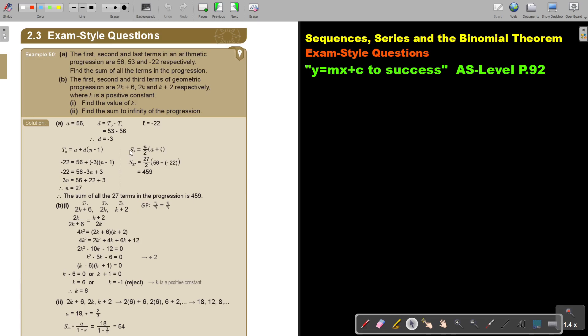And then I just simplify it and I get the value of n is 27. And now sn is n over 2 a plus l. So in the place of s 27, I'm actually looking for 27, I say 27 over 2, a 56, there is l negative 22.